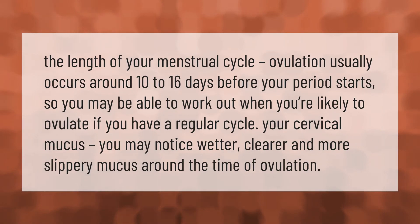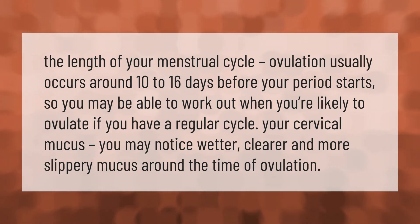The length of your menstrual cycle: ovulation usually occurs around 10 to 16 days before your period starts, so you may be able to work out when you're likely to ovulate if you have a regular cycle. Your cervical mucus: you may notice wetter, clearer, and more slippery mucus around the time of ovulation.